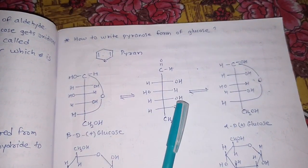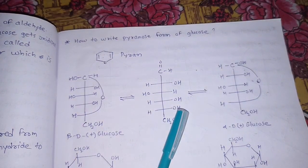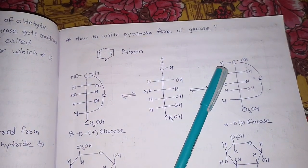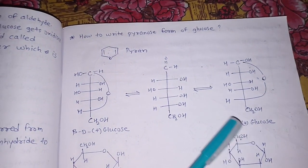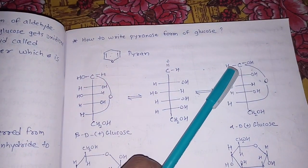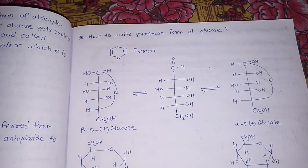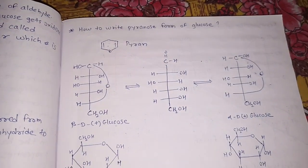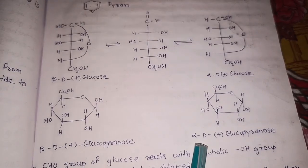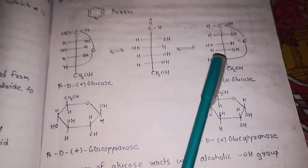In alpha-D-glucose, the OH obtained is on the right-hand side. In beta-D-glucose, only the position at the first carbon is changed — OH is on the left side and H is on the right side. From these, we can draw the pyranose structures: alpha-D-glucopyranose and beta-D-glucopyranose.